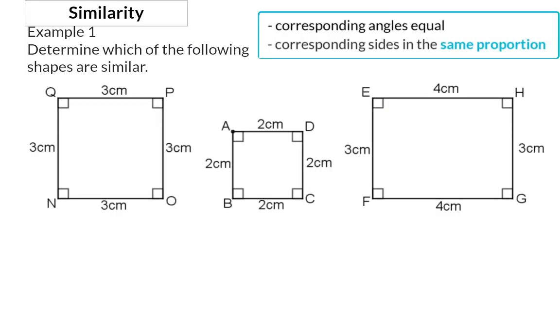Example 1: Determine which of the following shapes are similar. In our sketch we are given three shapes and all the angles of all the shapes are 90 degrees. So we can say that the requirement of corresponding angles being equal is satisfied for all of them. Next we need to determine for which shapes the corresponding sides are in the same proportion.